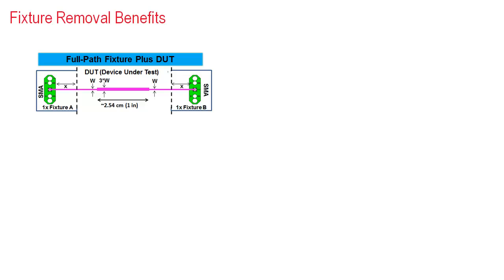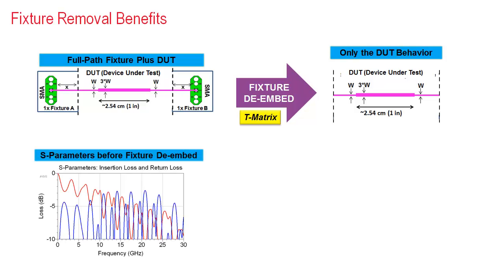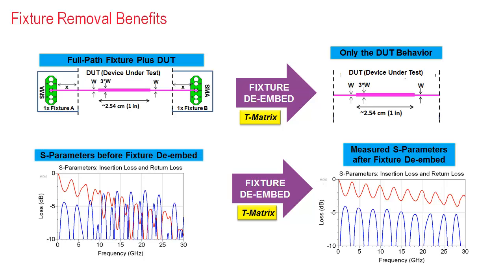Pictorially, we start with the measurement of the full path of the fixture plus DUT on the left, and then after de-embedding, one is left with the S-parameter behavioral model of just the DUT. The graph on the bottom left of the S21 insertion and S11 return loss versus frequency for the full path fixture plus DUT measurement shows that the complicated loss variations versus frequency caused by the fixture interactions with the DUT. After fixture de-embedding, the graph on the right now shows the expected S21 and S11 behavior of this simple series impedance discontinuity.